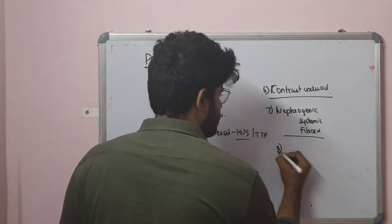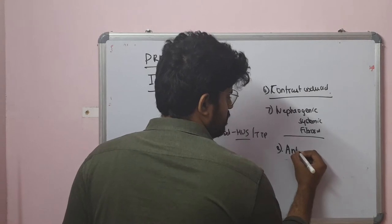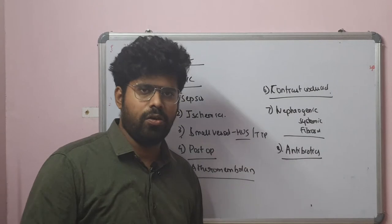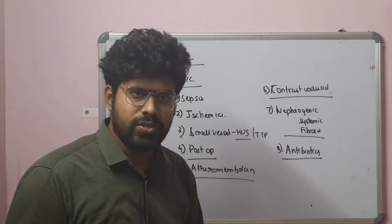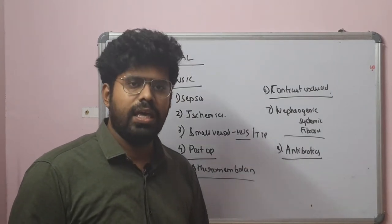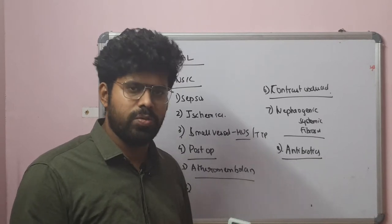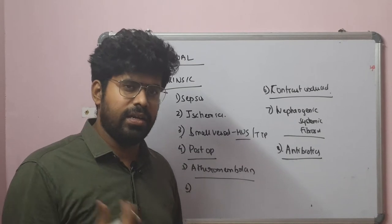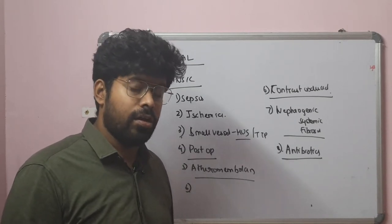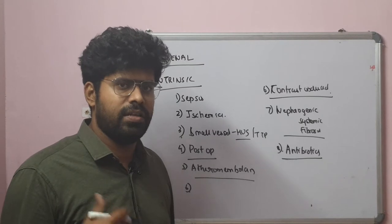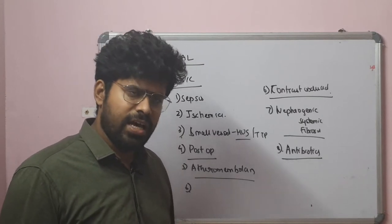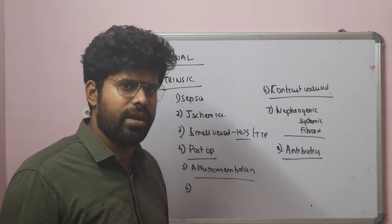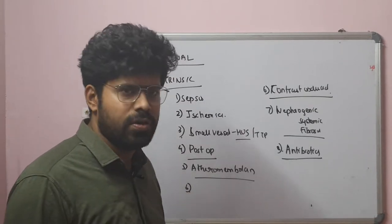Antibiotics causing AKI: aminoglycosides, amphotericin B, and acyclovir can cause dose-dependent damage to the renal tubules. Drugs like penicillin and cephalosporins can cause allergic interstitial nephritis, presenting with fever and rashes along with an acute drop in renal function. These are the antibiotics causing AKI.